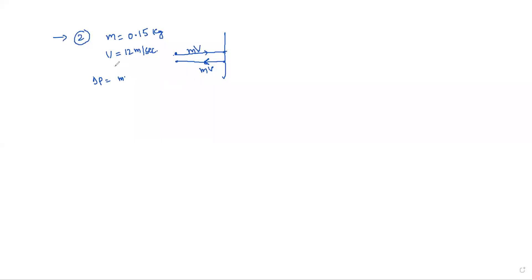The initial momentum is mv and the final momentum is minus mv. So the change in momentum delta p equals final momentum minus initial momentum, which gives minus mv minus mv. Taking the magnitude, mod delta p equals 2mv. So delta p is equal to 2mv.